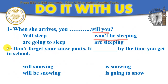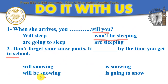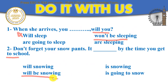Number two: Don't forget your snow pants. It will be snowing by the time you get to school. It will be snowing — that's the future continuous. It will be snowing by the time you get to school. Perfect.